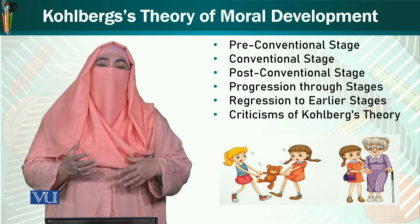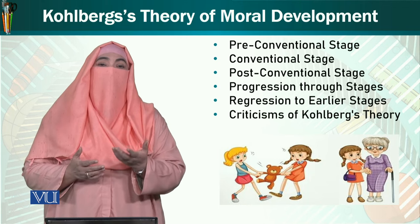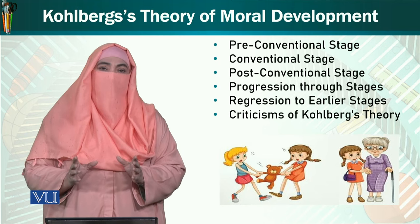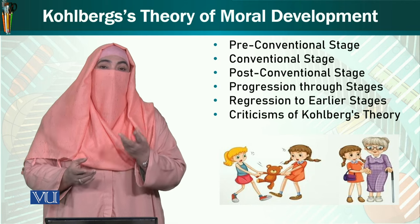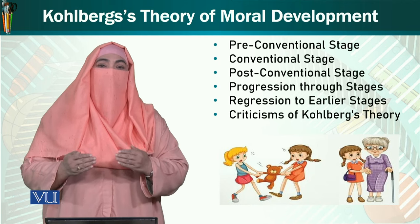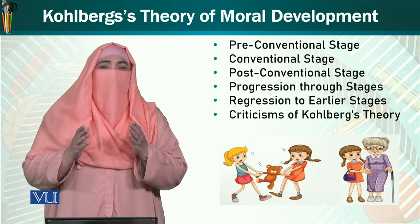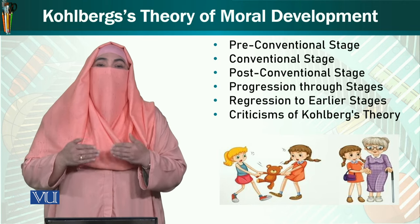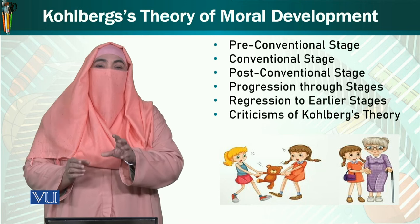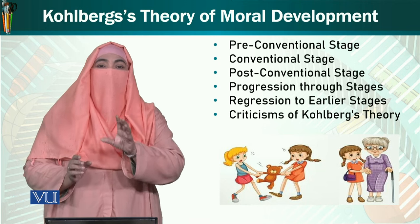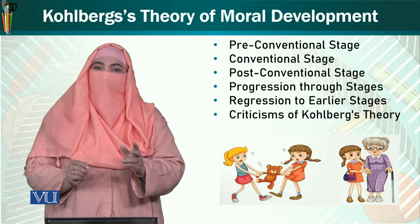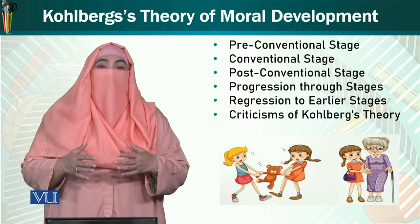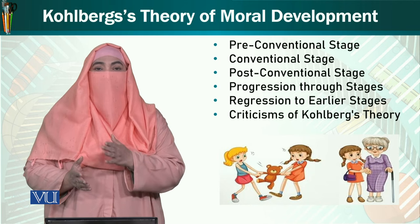انہوں نے جو چھ stages دی ہیں وہ بنیادی طور پر تین بڑے مرحلوں میں تقسیم کی جا سکتی ہیں. پہلا مرحلہ pre-conventional stage ہے جس میں دو stages ہیں. جب بچہ بڑا ہوتا ہے تو وہ صرف reward اور punishment کے بارے میں سوچتا ہے — جس چیز پر reward ملے وہ اچھی ہے، اور جس پر سزا ملے یا منع کیا جائے وہ بری ہے۔